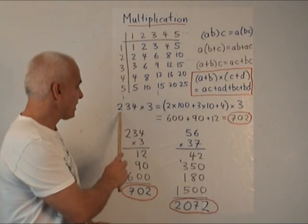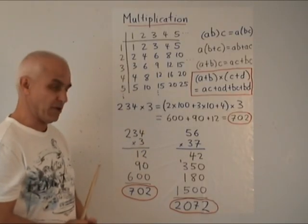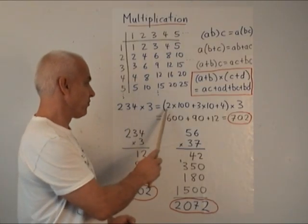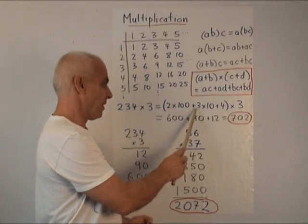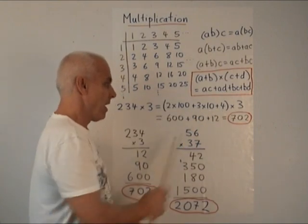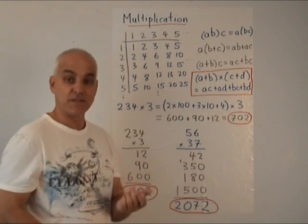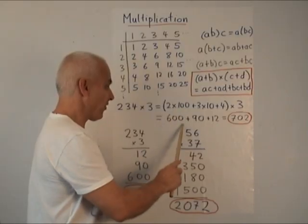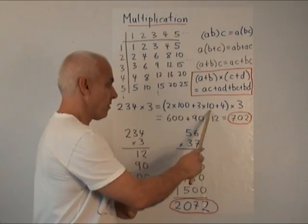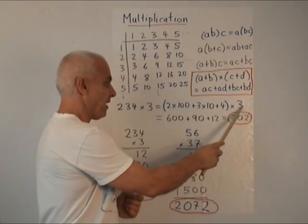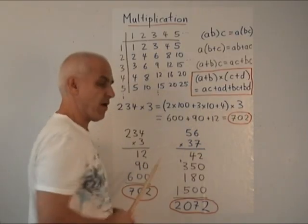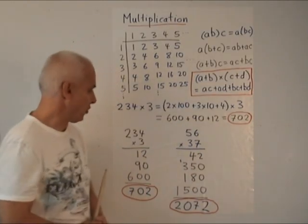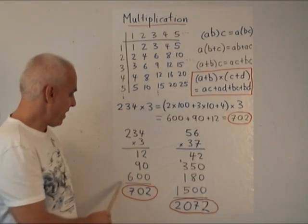So let's see what happens if we multiply 234 times 3. 234 is really 2 times 100, plus 3 times 10, plus 4. When we multiply by 3, we're really using the distributive law. The 3 is multiplied by this term to give 600, and also by this term to give 90, and 3 times 4, this term gives 12. And then we have to add up those three things to give us 702.